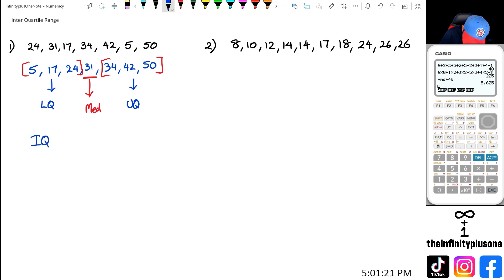So therefore, my interquartile range, which is also known as IQR, is equal to upper quartile minus lower quartile. So I've got 42 take away 17, which equals to 25.